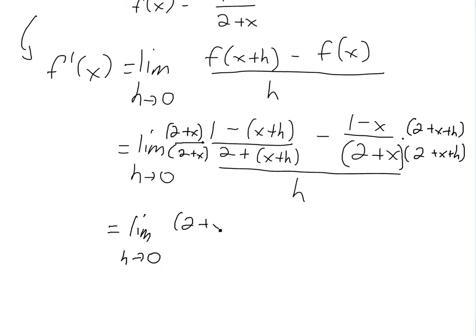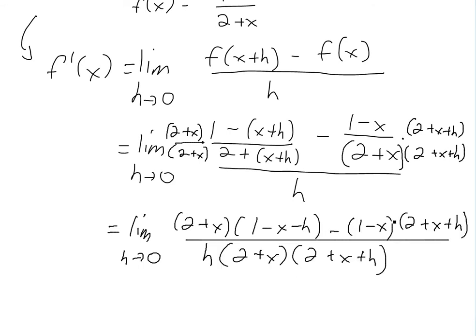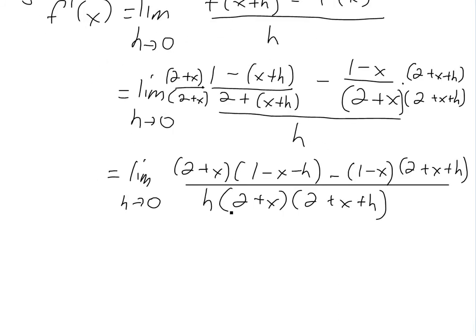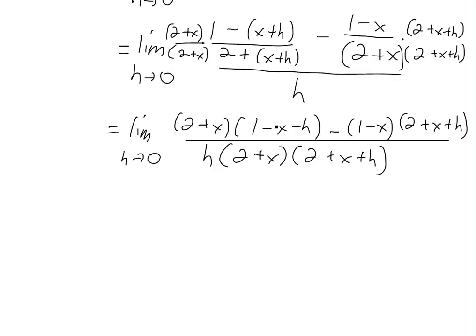Writing it out with the common denominator, we get 1 minus x minus h, then minus the quantity (1 minus x), times 2 plus x plus h, all over the common denominator, divided by h. Now we have to FOIL out all of these terms — multiply this by this, add it to this, and then add it to this — and do the same for the x side.